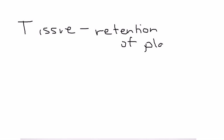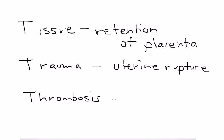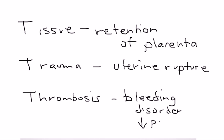The next T is tissue, implying a condition in which the placenta has not properly been expelled after delivery - retention of placenta. The third T is trauma, including any lacerations during delivery or uterine rupture. The fourth T is thrombosis, referring to any bleeding disorder such as thrombocytopenia, a low platelet count, that can contribute to or exacerbate bleeding.